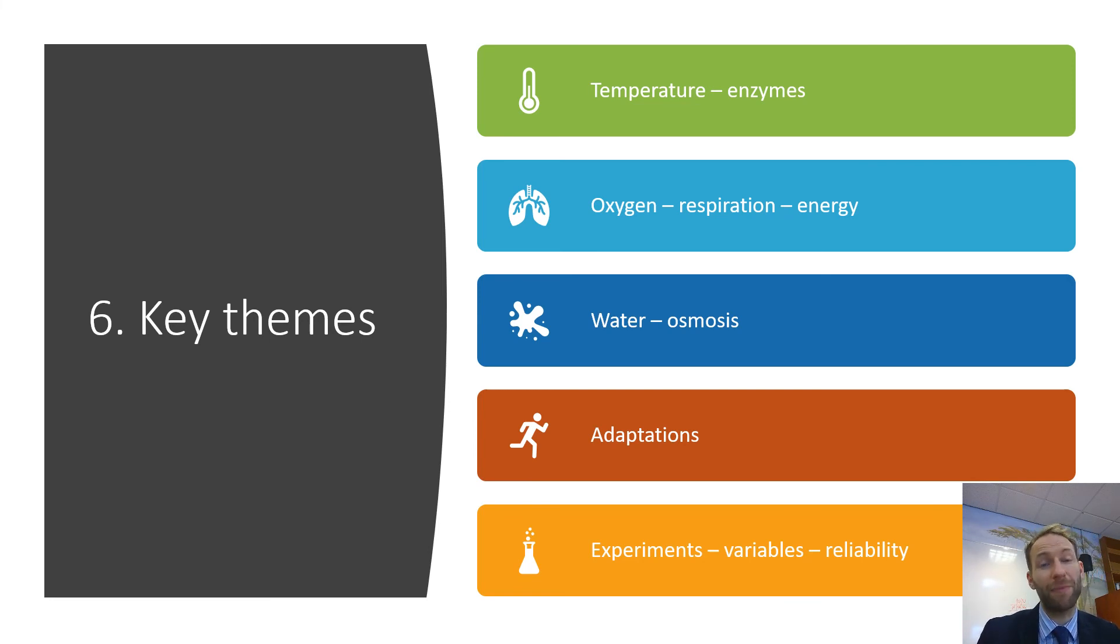And then experiments. There's going to be quite a lot of questions on experiments. On the nine that you need to know for paper one, you should be made really clear on your variables. Independent variable, the thing that you change. Dependent variable, the thing that you measure. And the control variables, things you keep the same. And think about reliability. Reliability is always down to repeats. The more you repeat the experiment, the more reliable it is.